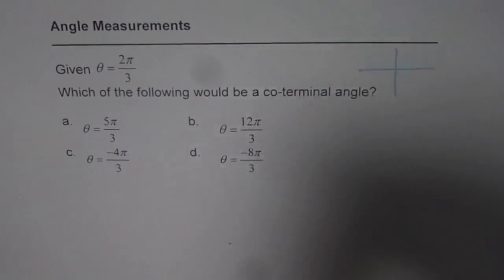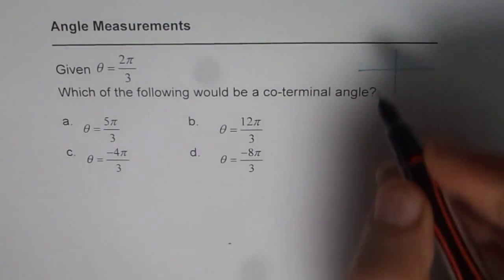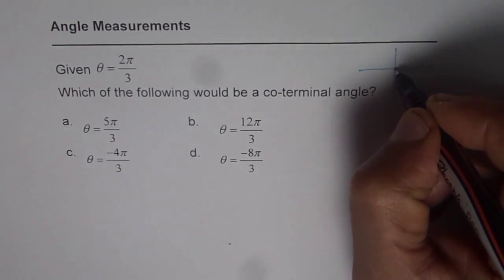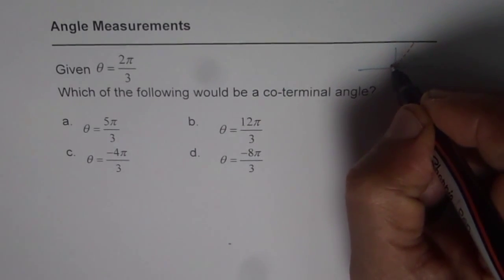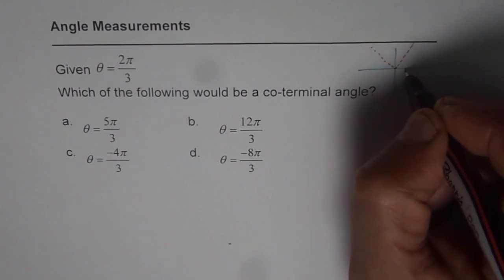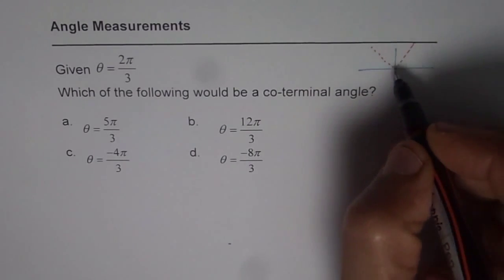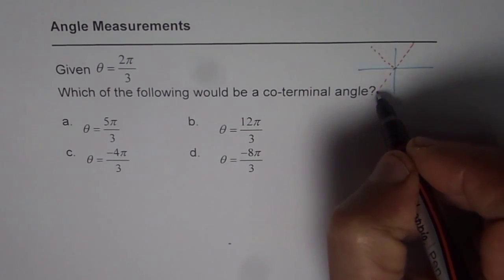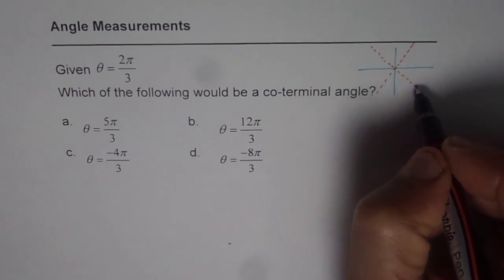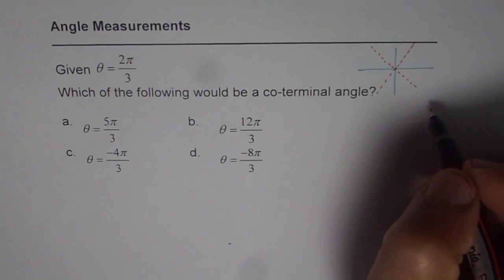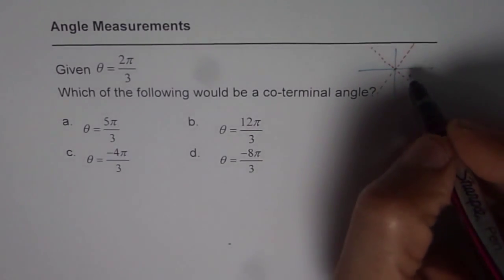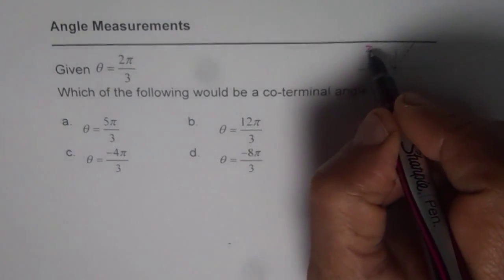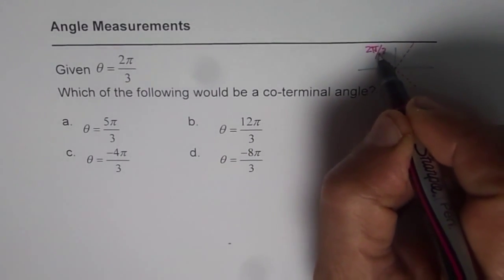Let us say we're talking about 2π/3 in this case. Let me divide this π into 3 portions — we divide like this. So these are 3 portions of π, and if I extend these lines then we get 6 in 2π. When we say 2π/3, this is 1π/3, and that is 2π/3. So this angle is 2π/3.